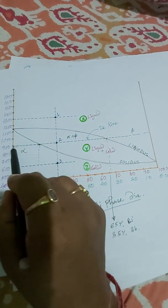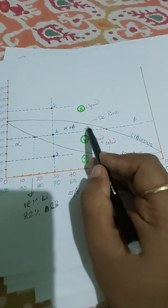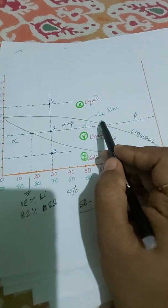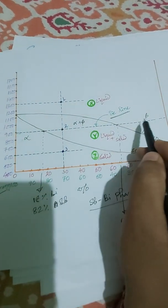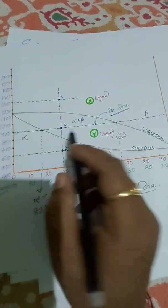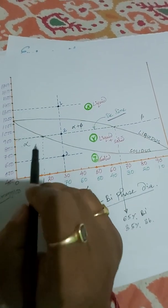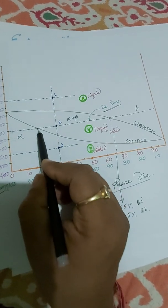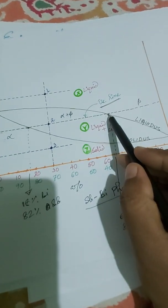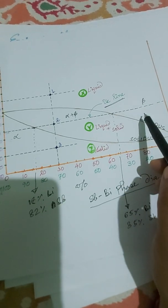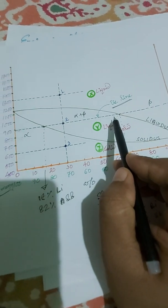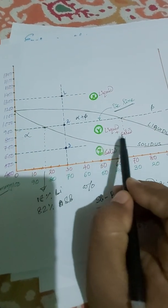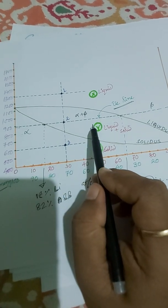This constant temperature line is called the tie line. Along the tie line, temperature is constant but the composition is varying. Up to 18% of bismuth it is solid phase; after 65% of bismuth it is liquid phase; and between 18% and 65% of bismuth, both liquid and solid phases are present.